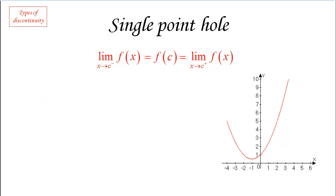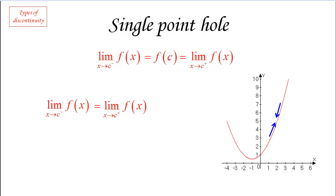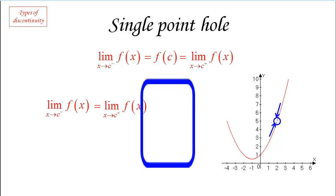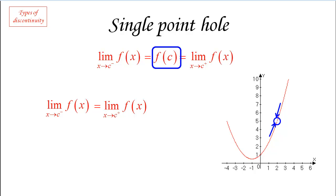Single point holes are difficult to see but easy to detect. As you approach from the left the function approaches some value, and from the right it also approaches a value — and those two values end up being the same. So the function approaches the same value from both sides; the only thing missing is the single point. To identify a single point hole, we need a value c where the function does not exist, but approaching from either side gives the same limit value.